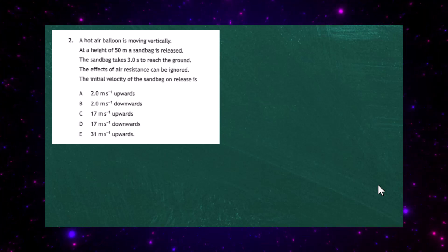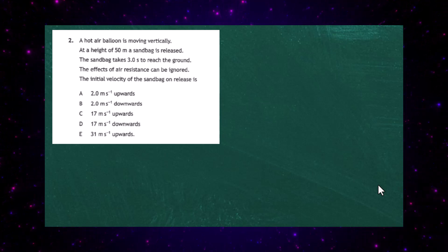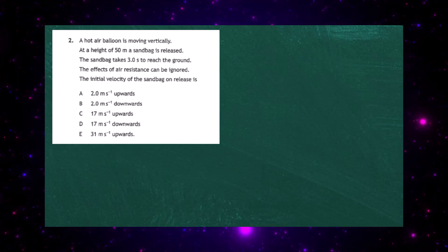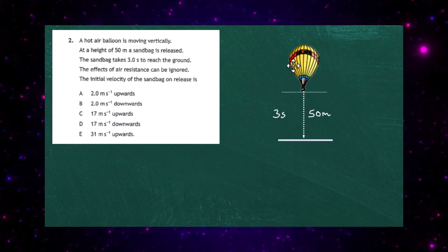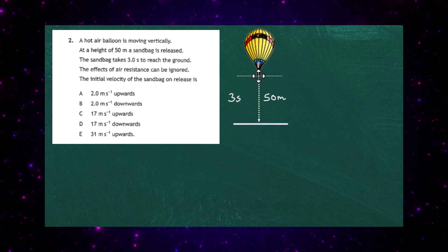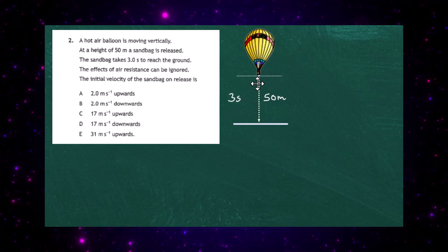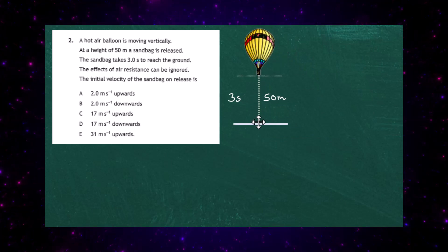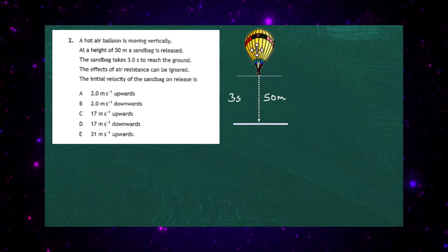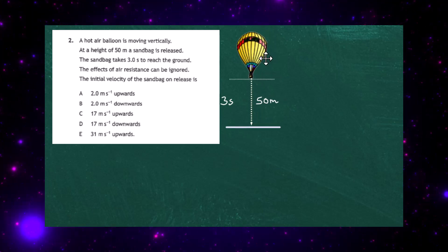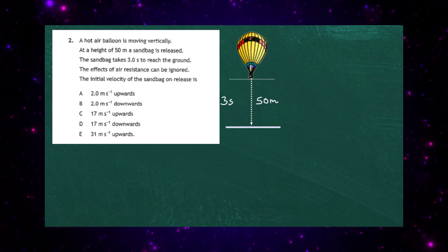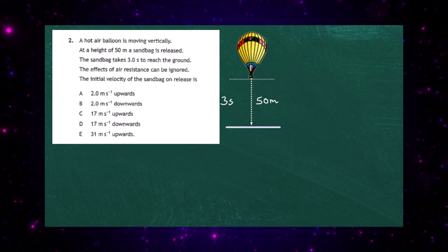Let's start off by looking at a picture of what's happening — a quick sketch. You can see the sandbag is released from the balloon and it falls a height of 50 meters in three seconds. Now what we'll have to do is put down our SUVAT variables u, v, a, s, and t.